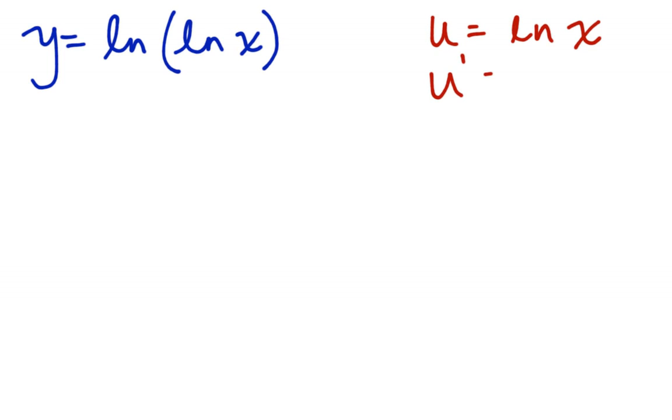Here's another. Let y equal ln of ln x. So, it looks like I have a chain rule situation with the inside function. So, I'm going to call u ln x and u prime, derivative of the inside, is 1 over x. We can't forget that. So, here we go.